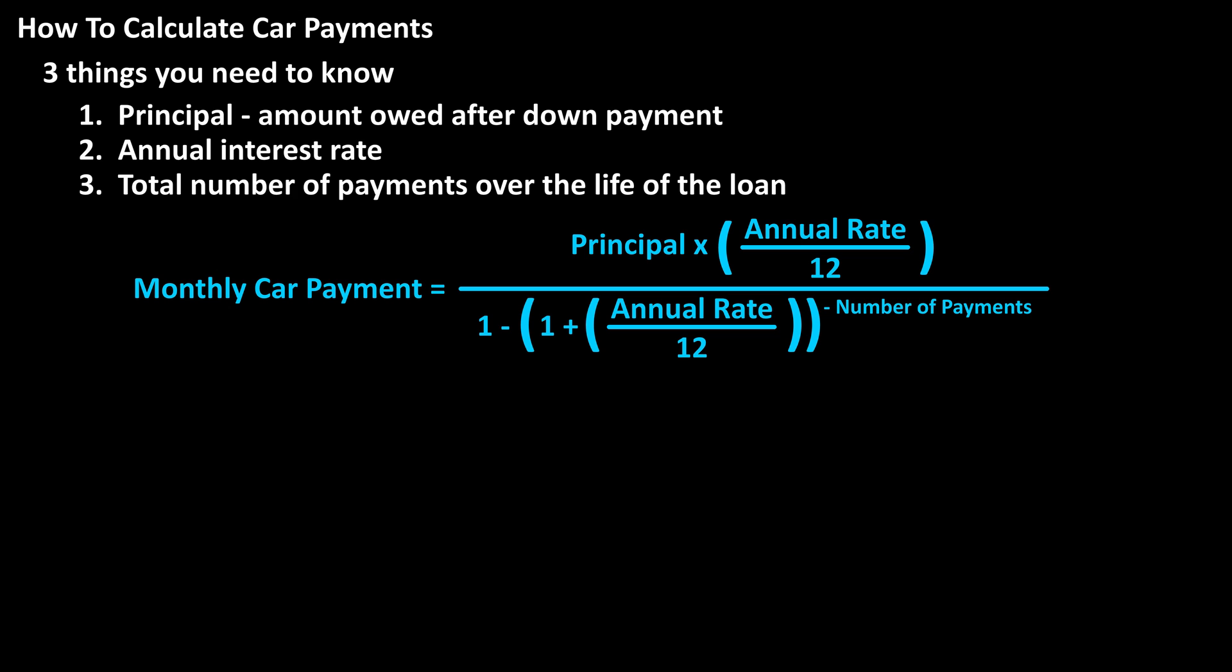one minus the quantity, one plus the quantity, annual percentage rate divided by the number of months in a year, so again 12, raised to the negative total number of payments over the life of the loan.